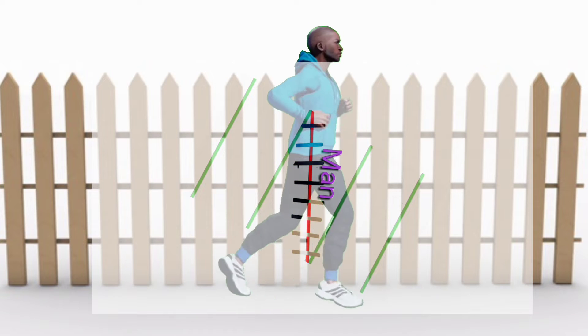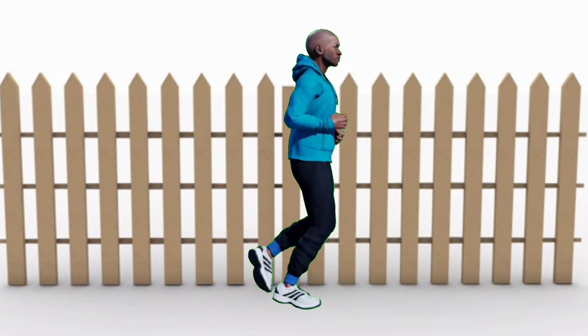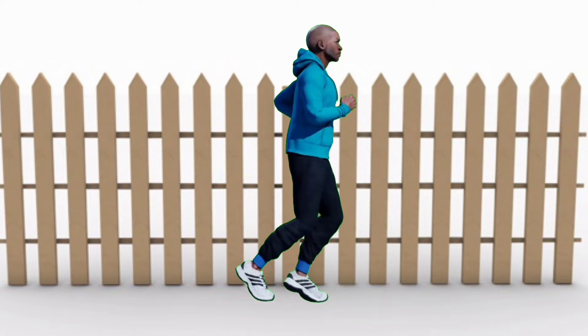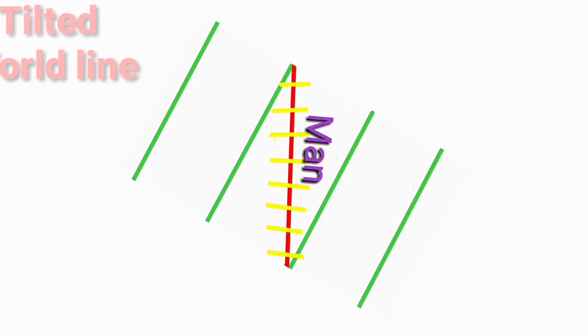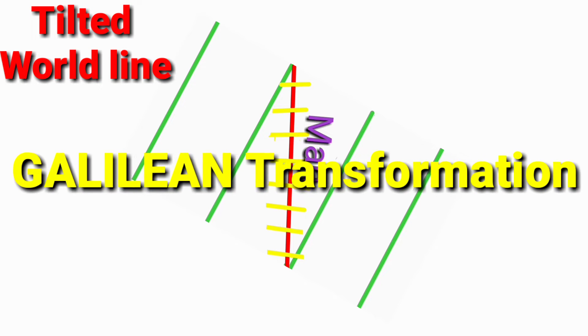Because the tilted edge of the flipbook, the world line is going upwards. The fences are coming and passing to him in where the world line is tilted. This rearrangement of panels is called Galilean transformation.